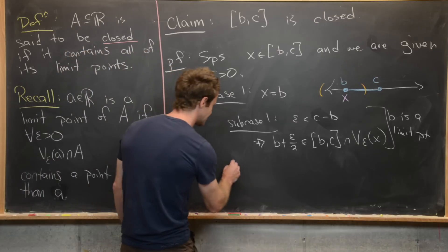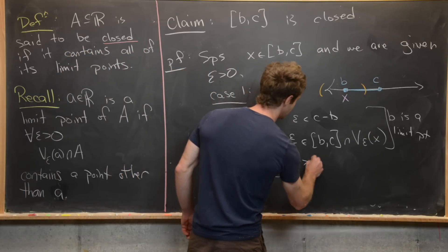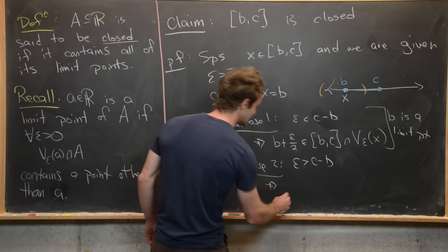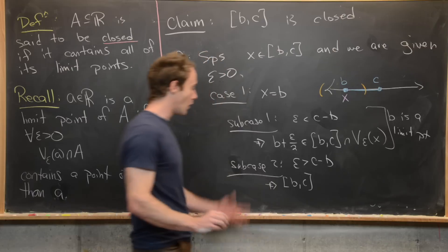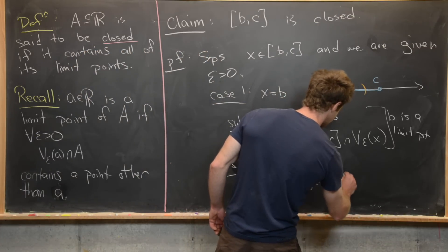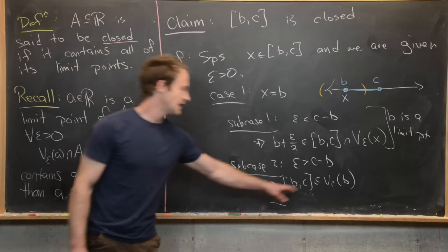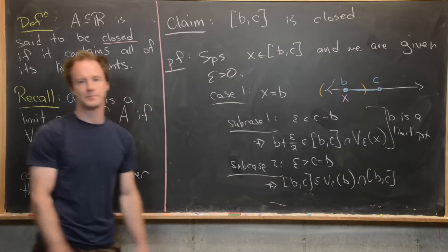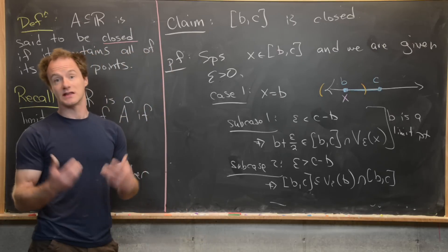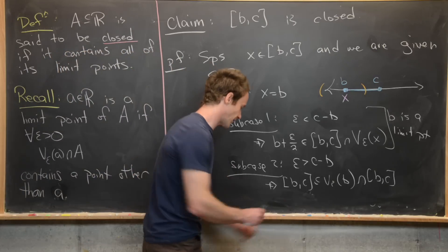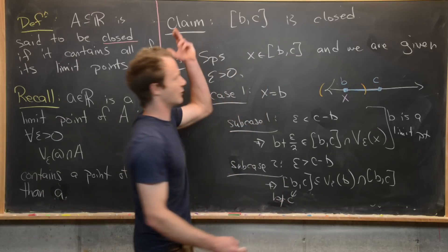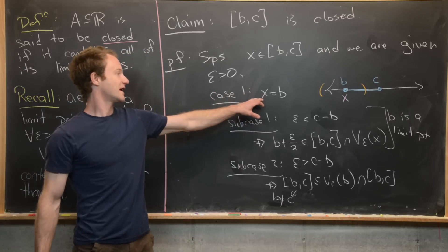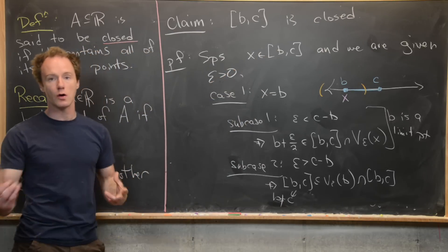Sub-case two: epsilon is greater than C minus B, meaning epsilon is larger than the length of the interval. In that case, the entire closed interval is a subset of this epsilon neighborhood, and therefore a subset of the epsilon neighborhood intersected with itself. The closed interval contains elements not equal to B — for instance it contains C. We're assuming B and C are different, so X is a limit point in this case as well.